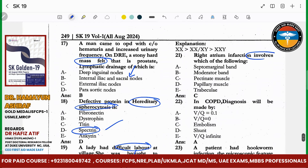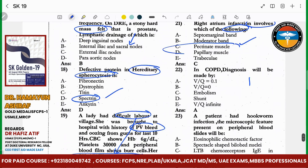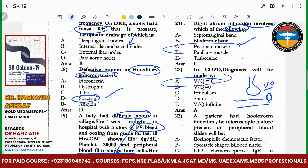Regarding the right atrium pectinate muscle — in COPD, you know there is a problem in ventilation. The perfusion is totally fine. So if ventilation is reduced, the V/Q ratio will be less than 0.8 — 0.1 is the right answer.